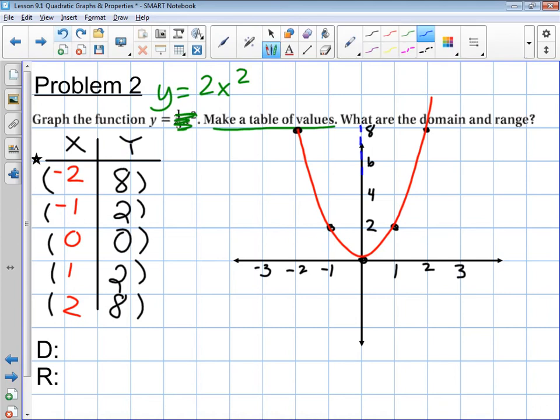And just as we saw in the other examples, this parabola has an axis of symmetry. It has a vertex, and because the vertex is at the bottom, this is a minimum.